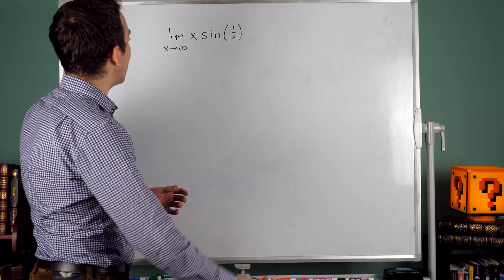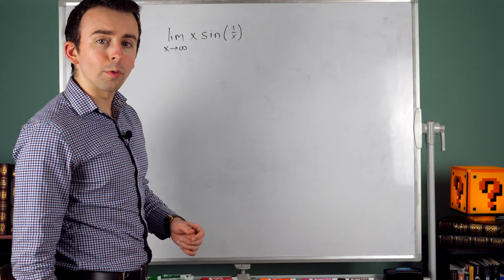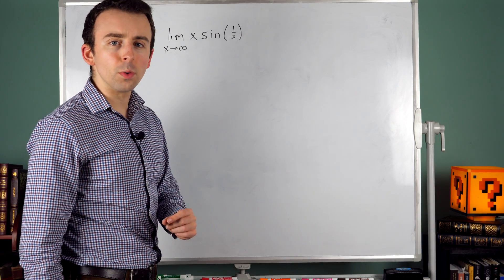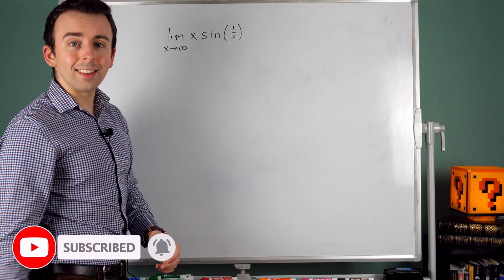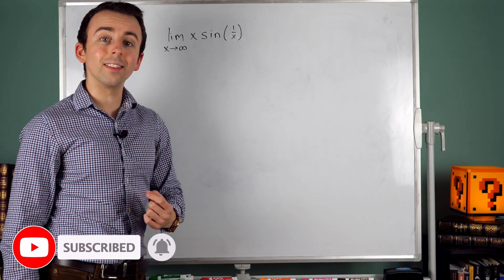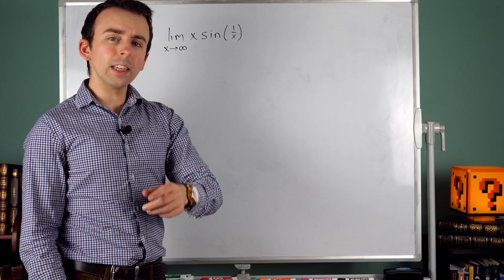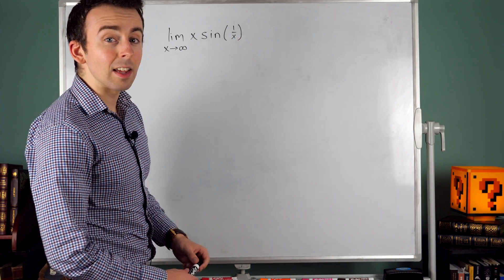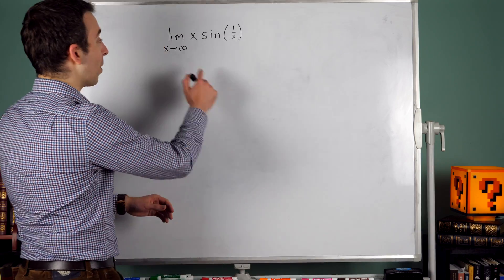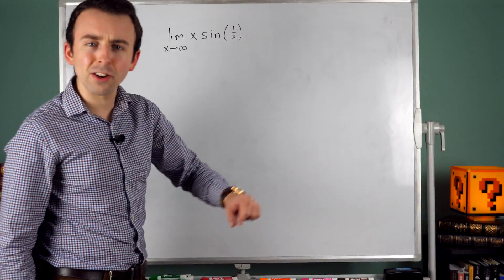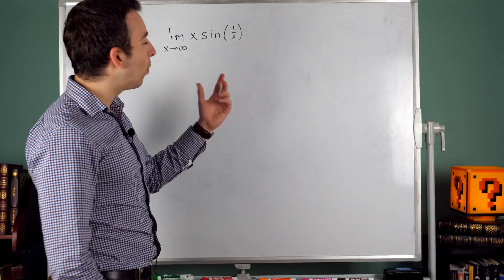Hi there. What's the limit of x times sine of 1 over x as x goes to infinity? In a previous lesson, we evaluated this limit with x approaching 0, and that limit was equal to 0. I'll leave a link in the description to that lesson if you're interested. This time, we're not talking about 0 — we're talking about x going to the edges of the universe, x is going to infinity. What's this limit?